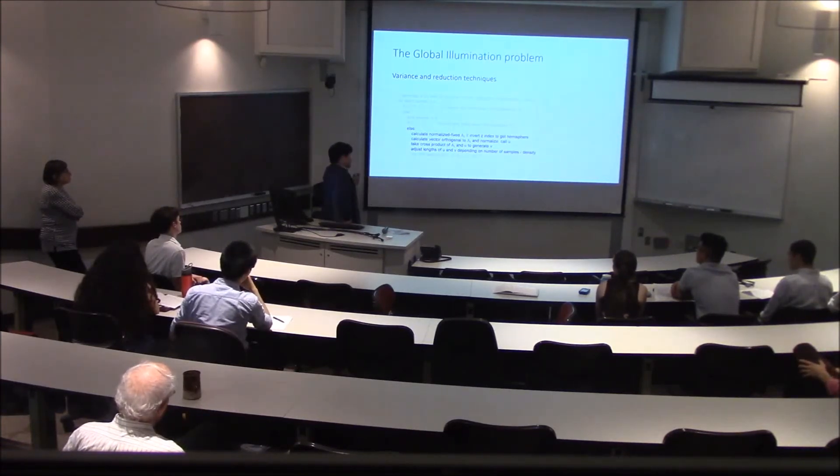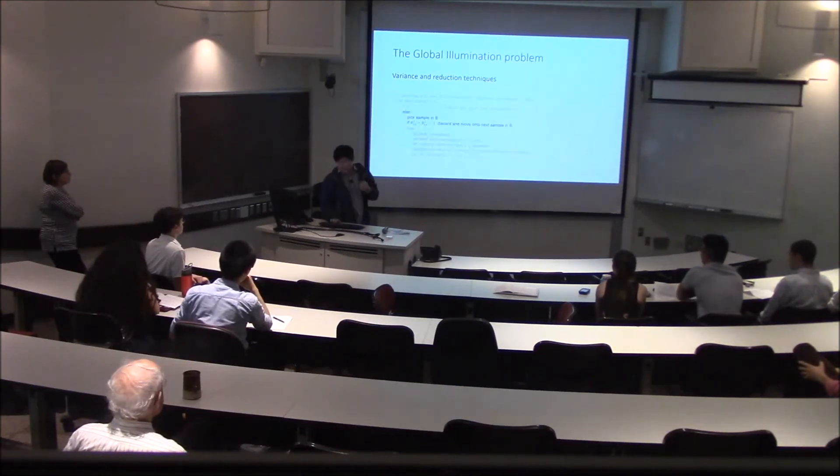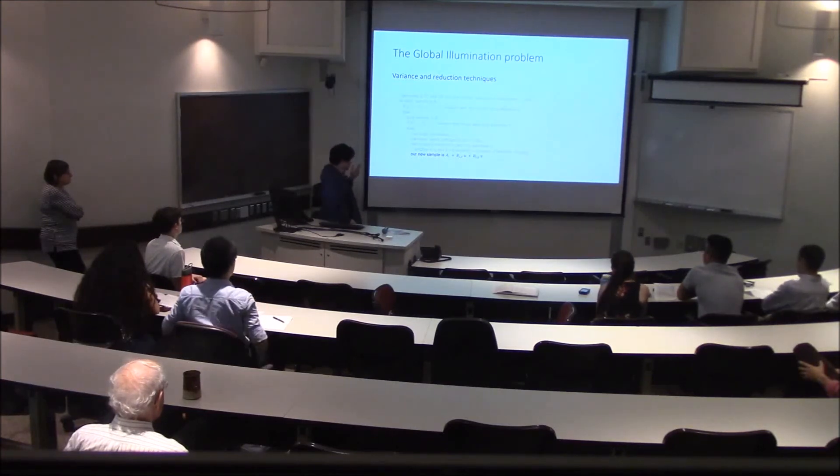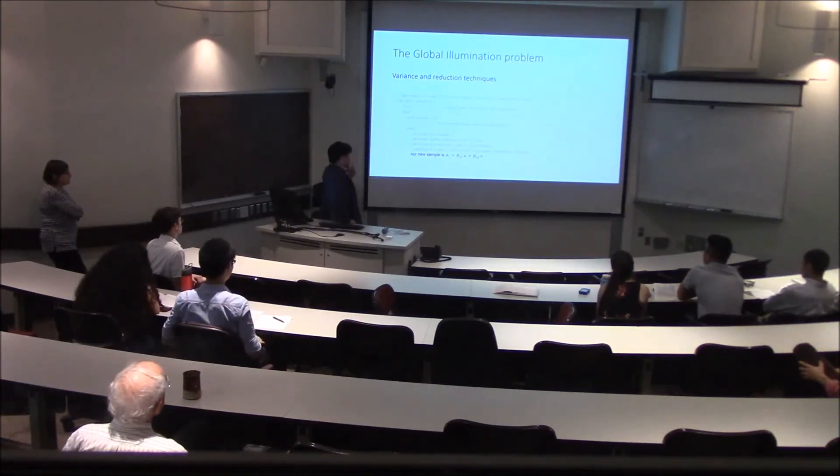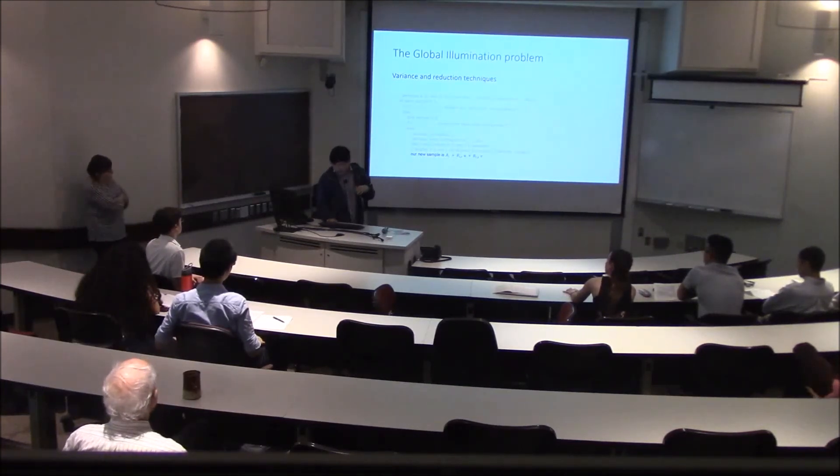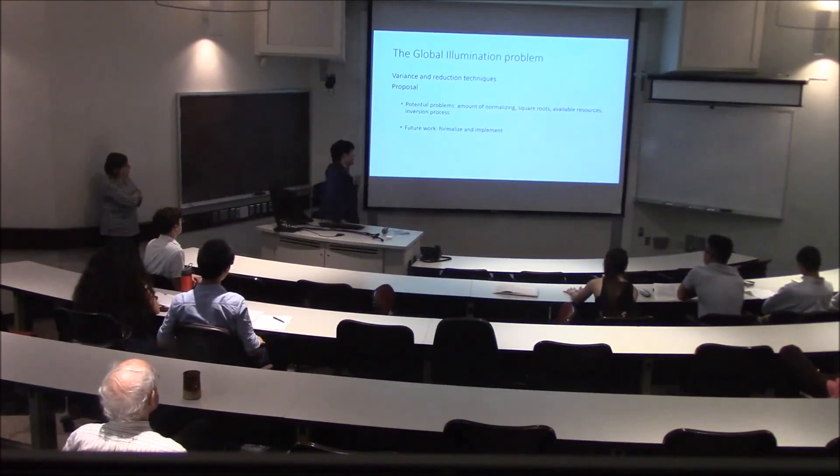We'll adjust u and v depending on the number of samples that we're taking. Then our new sample would be this, where a sub i would be the sample based off of the regular quasi Monte Carlo method or low discrepancy sequence, and the second and third term would be some kind of variation.